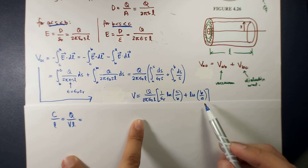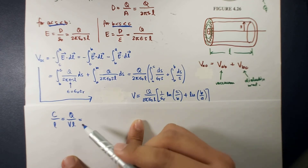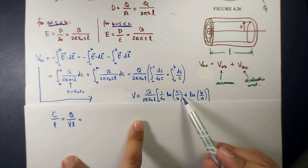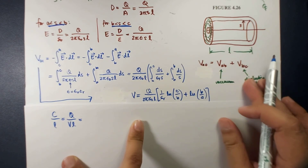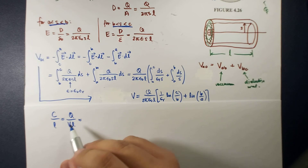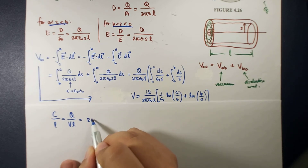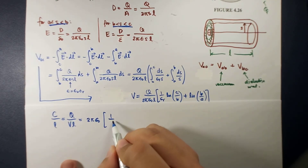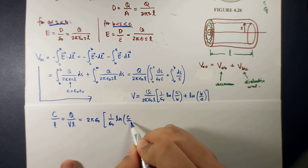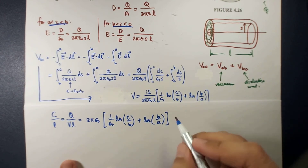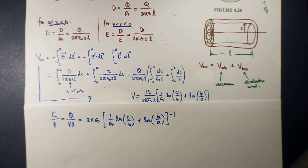The result is: the capacitance per unit length C/L equals 2π epsilon_naught times the reciprocal of [1/epsilon_r times ln(C/B) plus ln(B/A)], which we write as 2π epsilon_naught divided by [ln(C/B)/epsilon_r + ln(B/A)]. This is the capacitance per unit length for the coaxial cable partially filled with a dielectric.